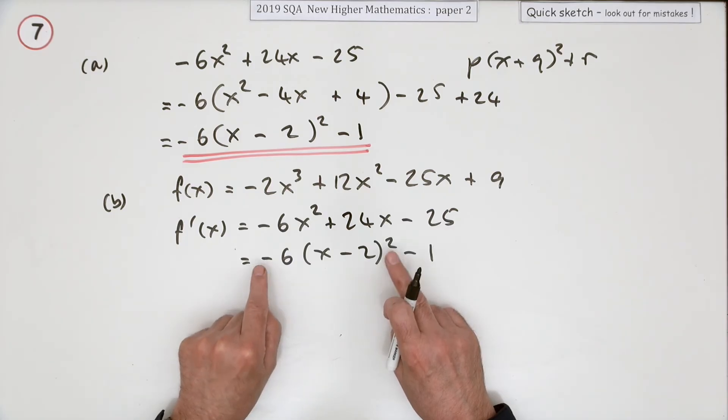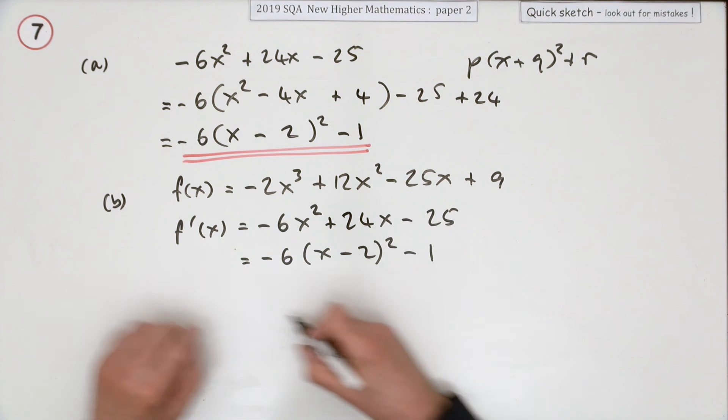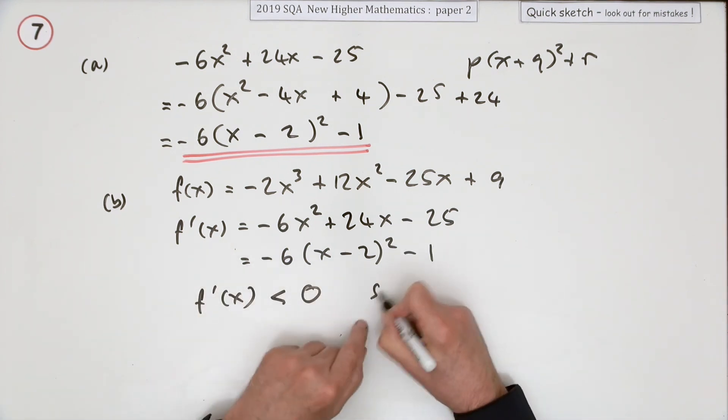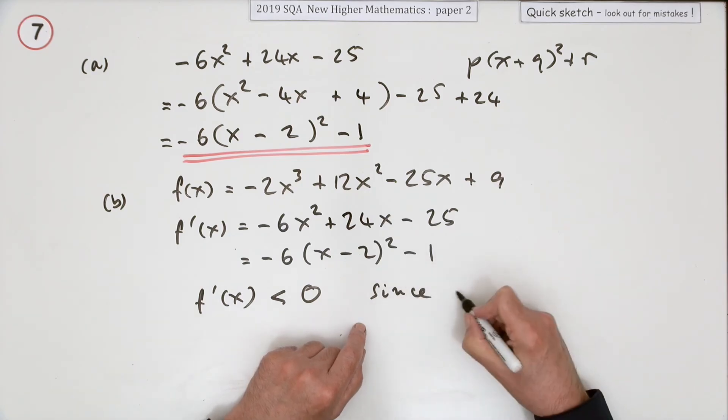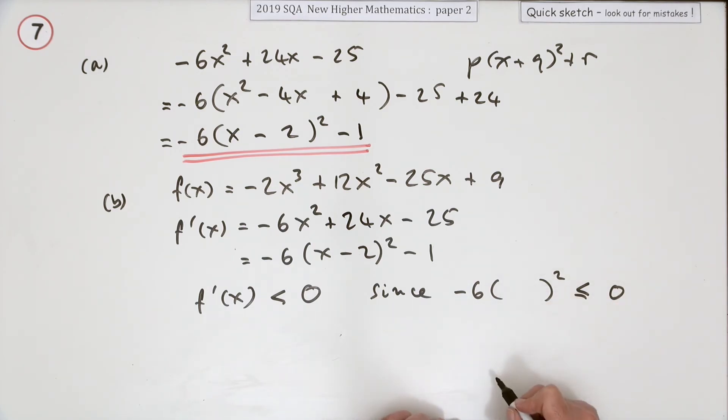Well, squares can never be negative, so this term has to be always negative or at best zero I suppose. We'd have to do this: f'(x) is definitely less than zero. Just give the reason: since negative 6 times a square has to be less than or equal to zero, doesn't matter what's inside it.